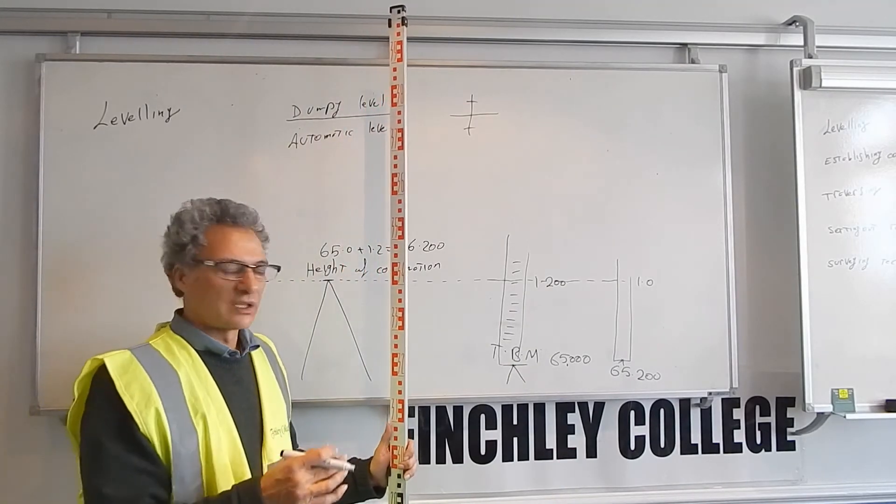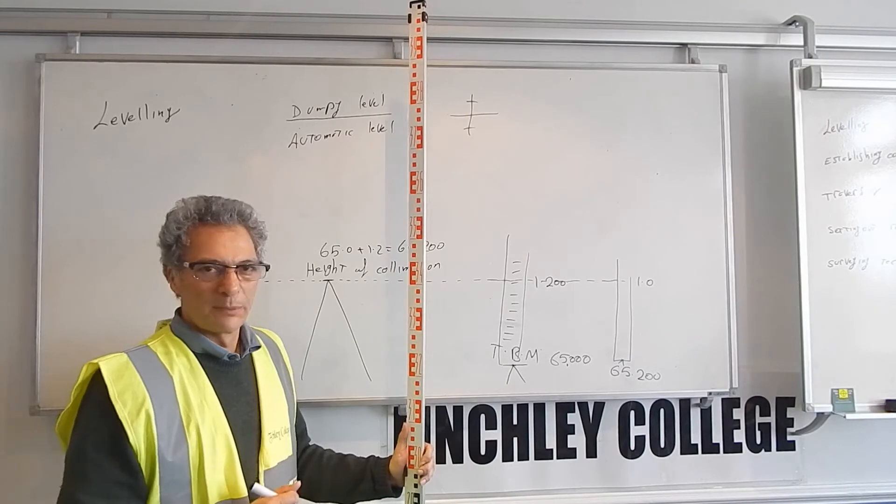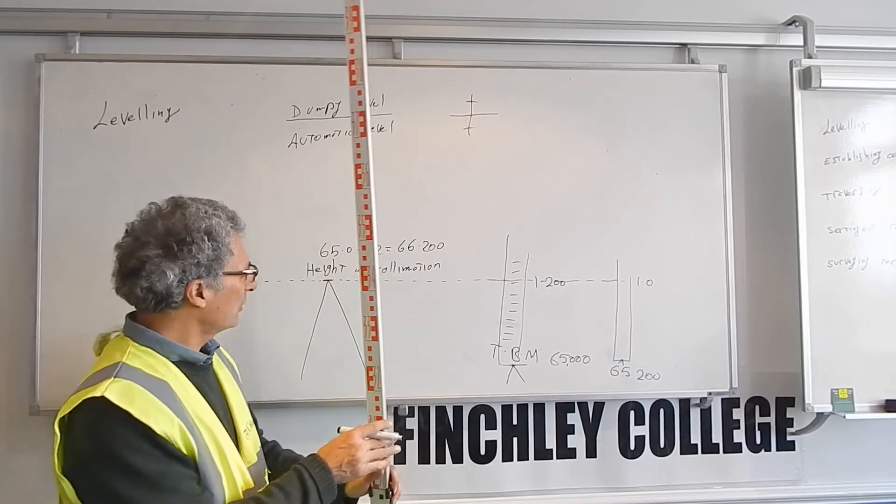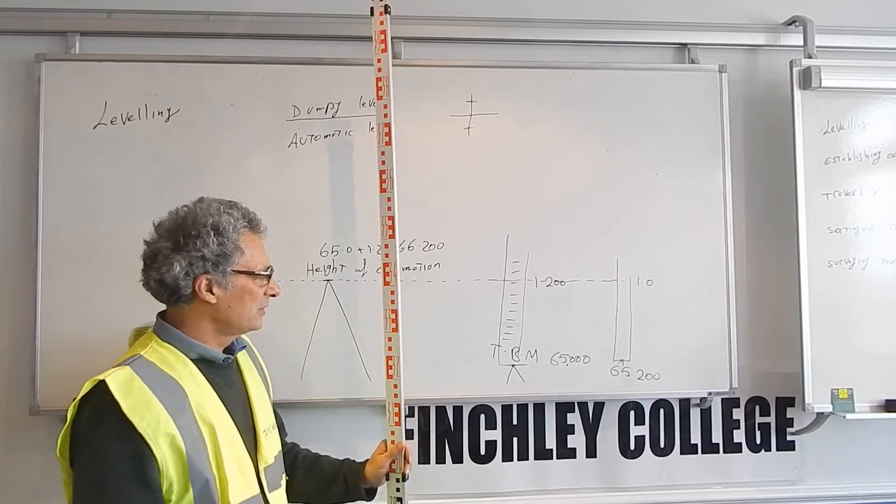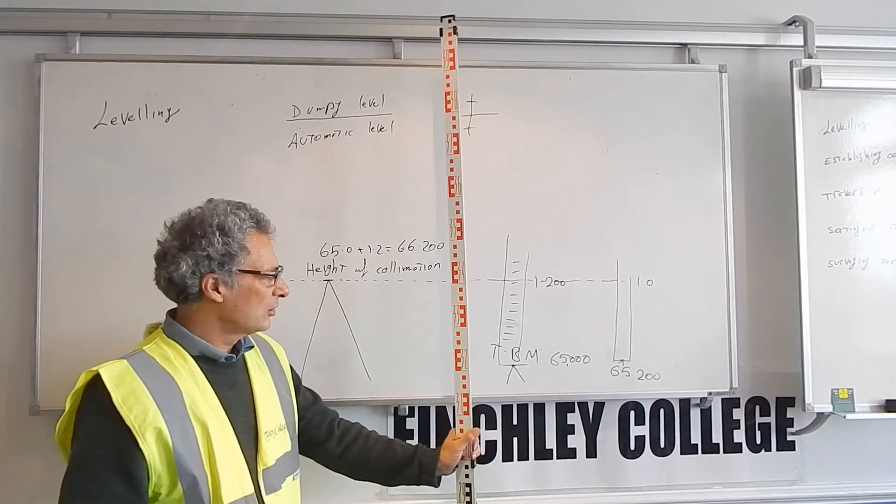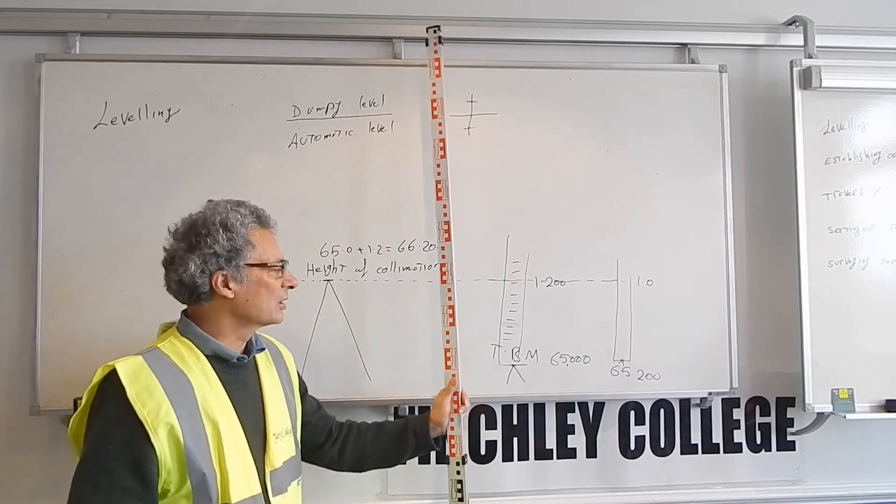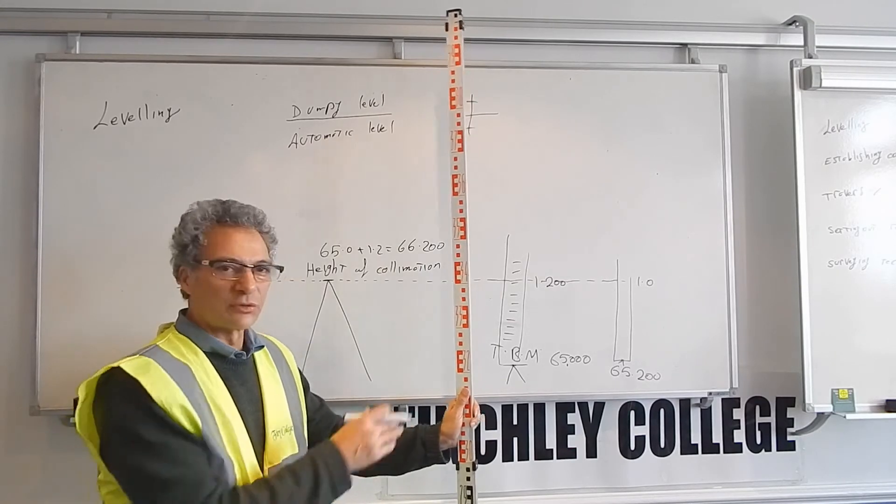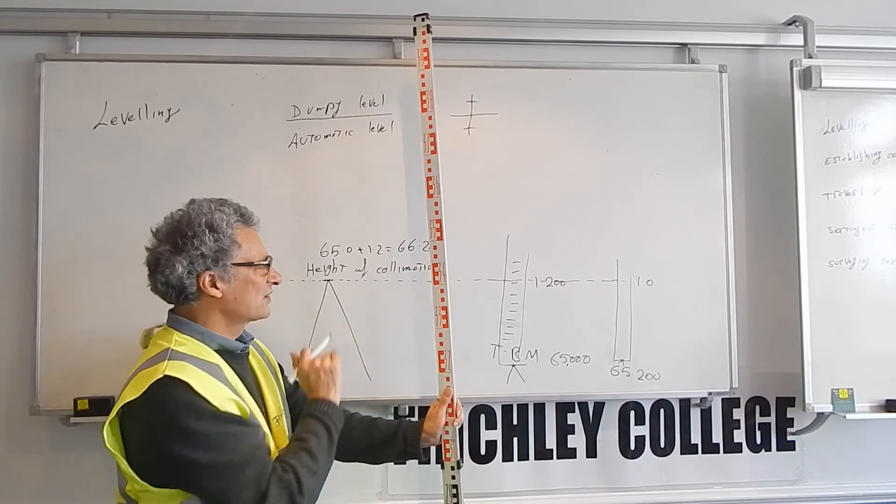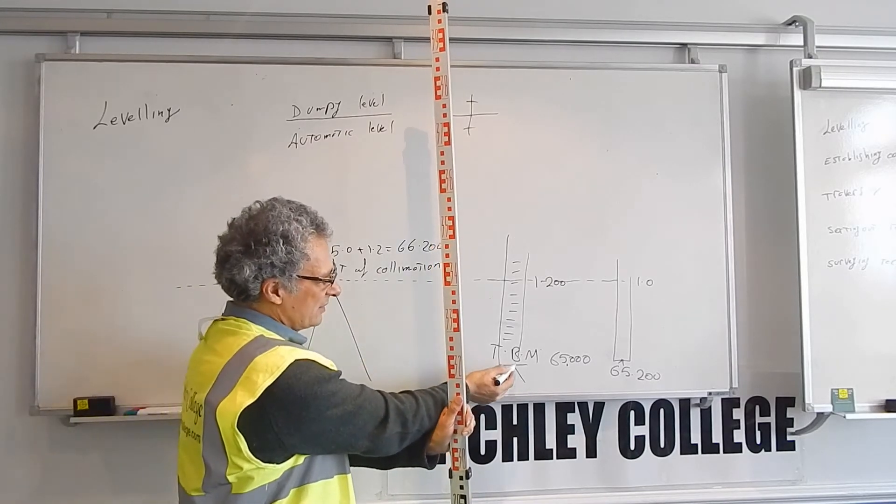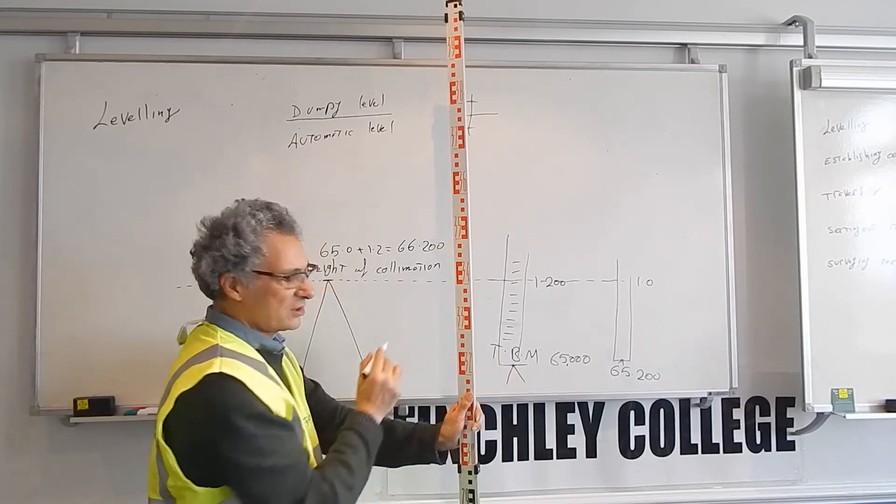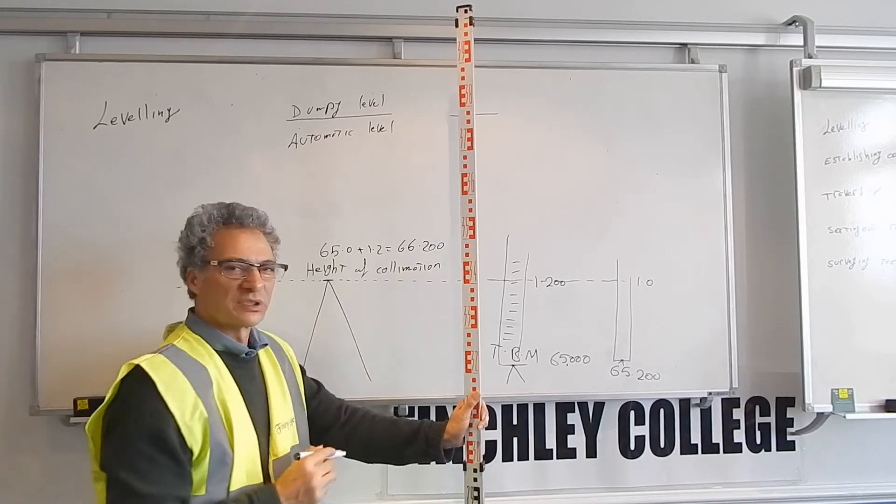That is the object of leveling. Leveling is to transfer heights, to find the heights of points that we don't know. We need to find out the height of the instrument first by holding the staff on the benchmark or temporary benchmark and taking a reading. That's called a backsight reading.